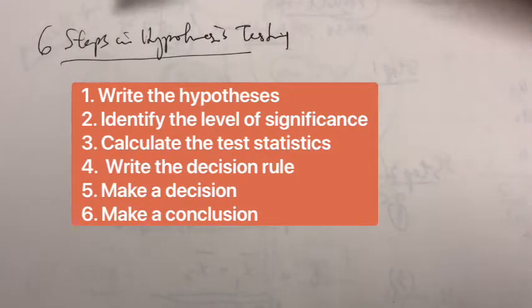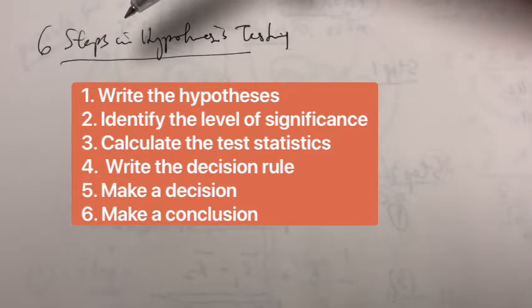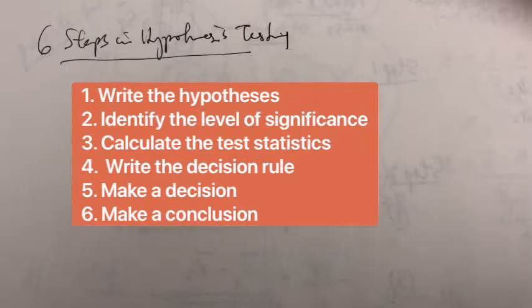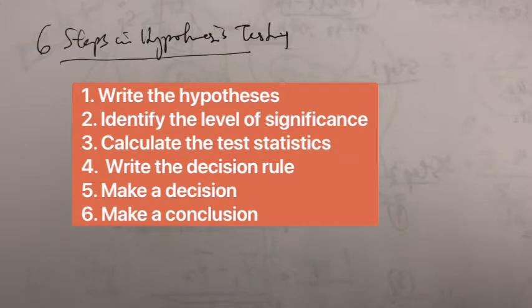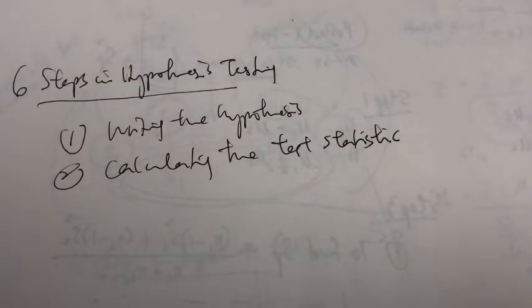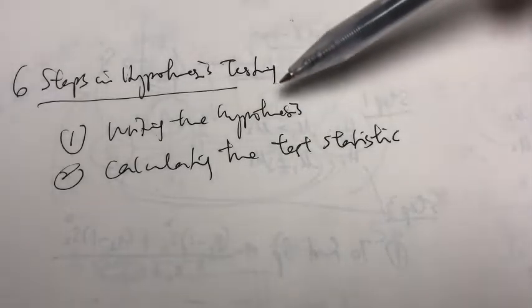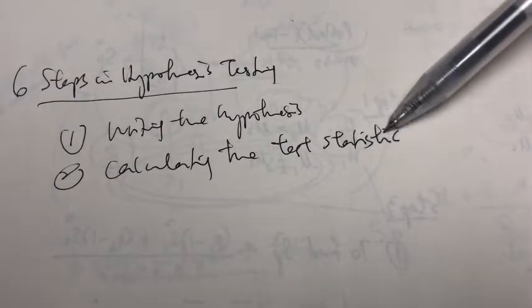As always, our hypothesis tests follow the same six steps. The first step is to write the hypothesis. The second step is to determine the level of significance or alpha. The third step is to calculate the test statistic. The fourth step is to write down the decision rule. Step five is to make a decision — either reject or do not reject the null hypothesis. And step six is to come up with a conclusion. However, there are two main differences in the steps when doing a dependent samples test: one is in writing the hypothesis, and secondly in calculating the test statistic.